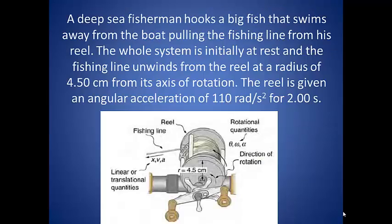A deep-sea fisherman hooks a big fish that swims away from the boat, pulling the fishing line from his reel. The whole system is initially at rest, and the fishing line unwinds from the reel at a radius of 4.5 centimeters from its axis of rotation. The reel is given an angular acceleration of 110 radians per second squared for 2.00 seconds.